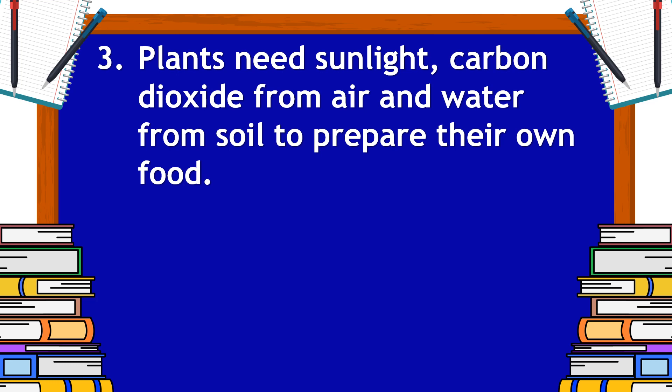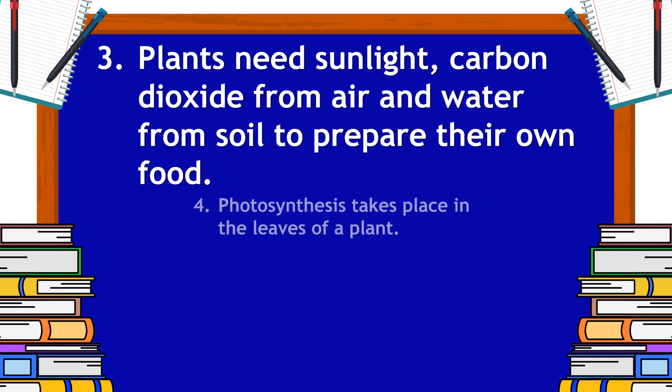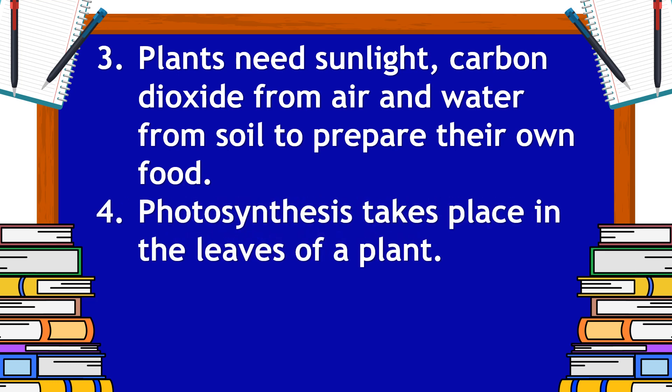Plants need sunlight, carbon dioxide from air, and water from soil to prepare their own food. Photosynthesis takes place in the leaves of a plant.